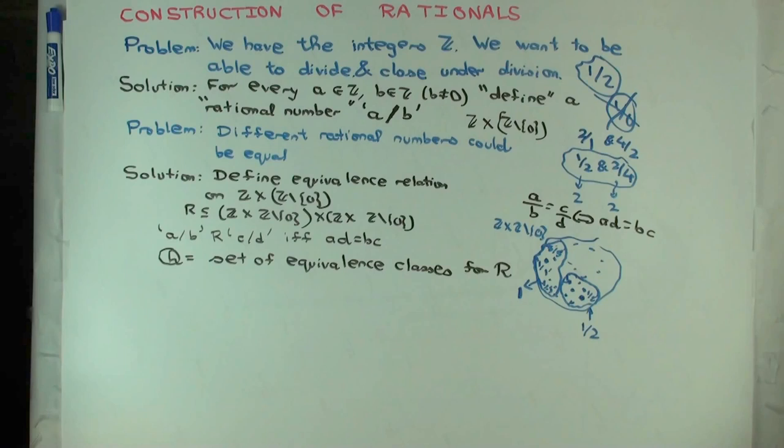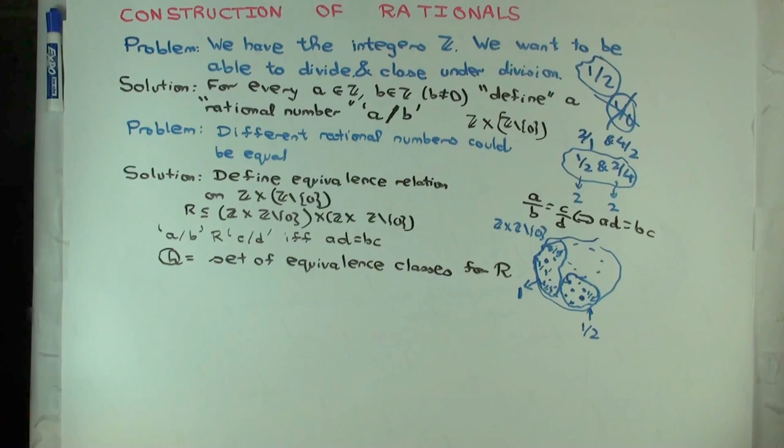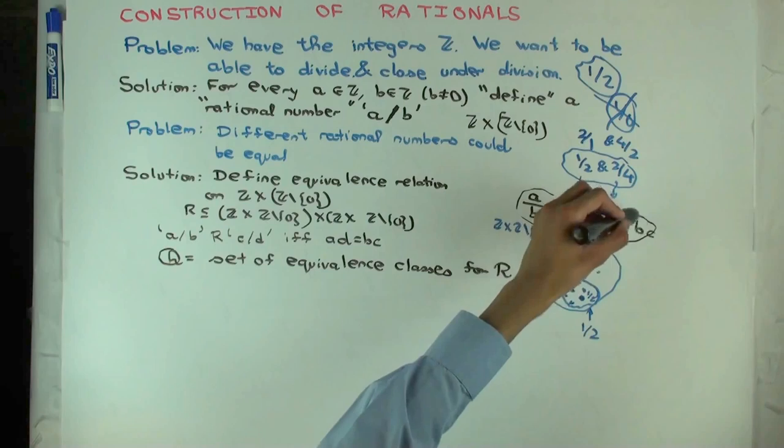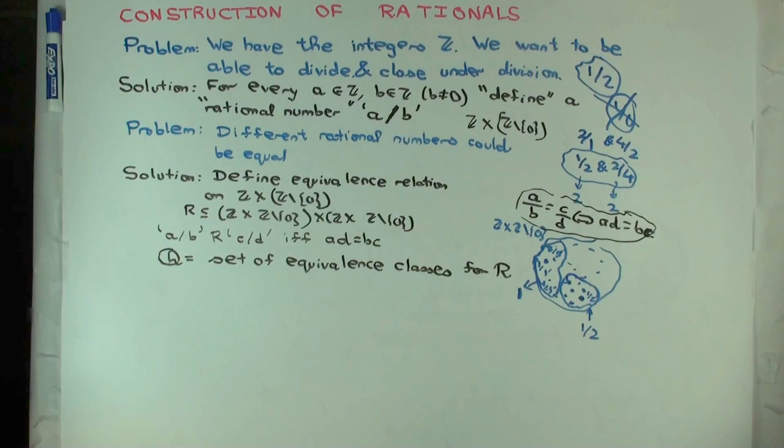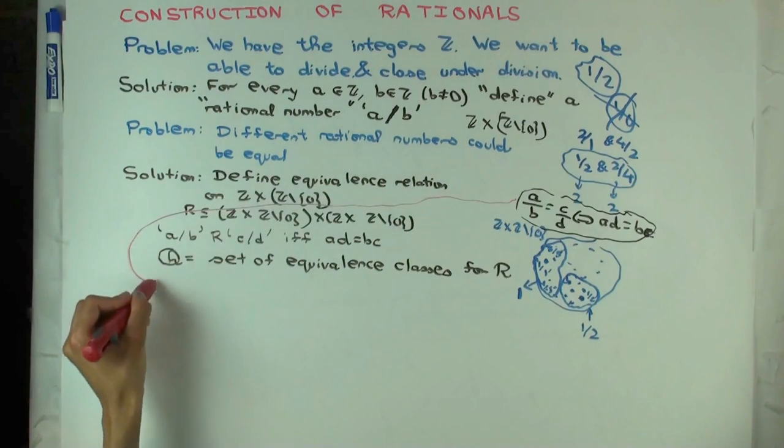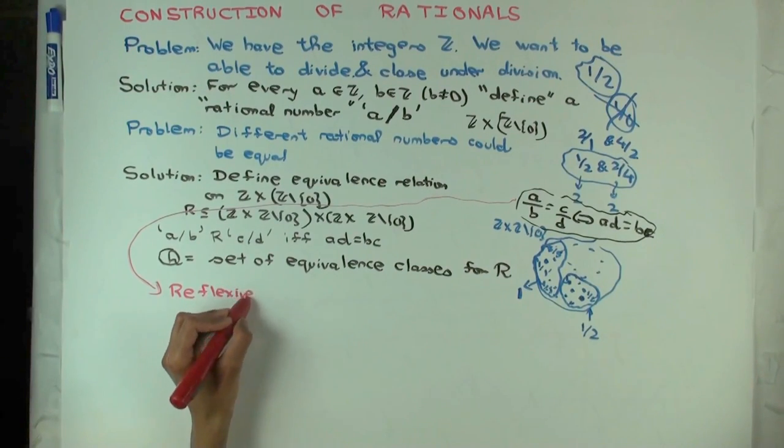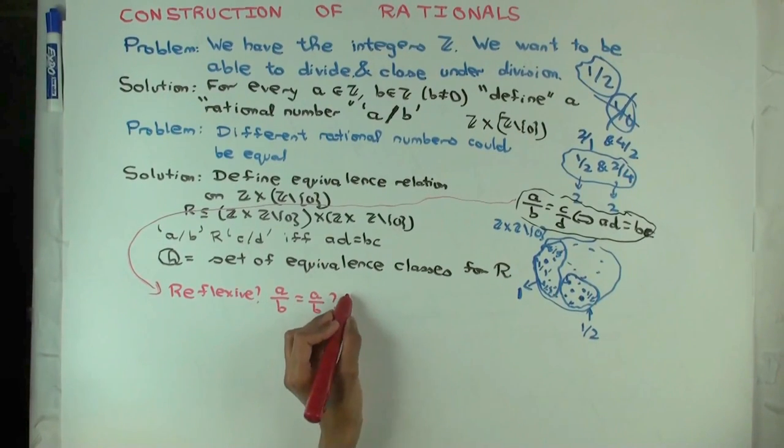What did I omit checking? I didn't actually check that this is an equivalence relation, did I? It's not so obvious that it is an equivalence relation, right? Do you want to quickly go over the proof that this is an equivalence relation? So is it true that A/B equals A/B? Yes, because AB equals BA. Or whatever. AB equals BA.